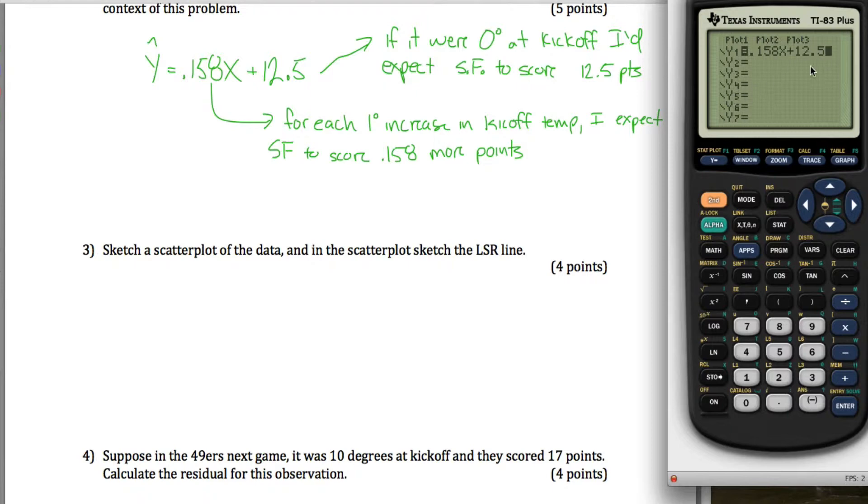Now what I want to do is sketch this line on a scatter plot. To make a scatter plot, you go under stat plot, so hit second, y equals, and then under my first one, turn it on, and select the type that looks like a scatter plot, this first one. My x values are still in L1, my y's are still in L2, and then graph this thing. I'm instead going to do zoom stat, and let it adjust the window for the statistics problem that's going on. There it is.